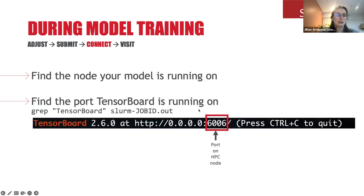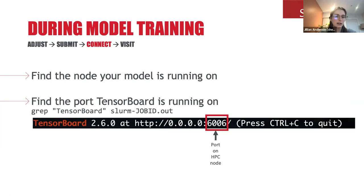We need the job ID to figure out what port TensorBoard is running on. To do this, take advantage of the log files that Slurm generates — use grep to search for 'TensorBoard' (capitalization is important) in the Slurm output file. The response shows TensorBoard is running on port 6006. About 90% of the time TensorBoard runs on 6006, but there's a small chance someone else is running TensorBoard on that same node — in that case it'll be put on 6007 or 6008. So it's good to run this to make sure you're connecting to the right port.